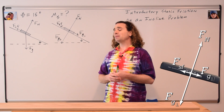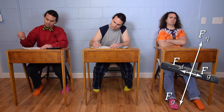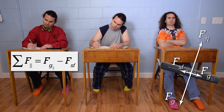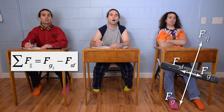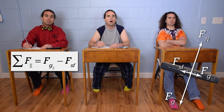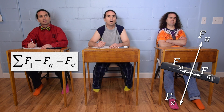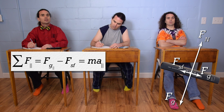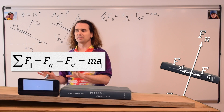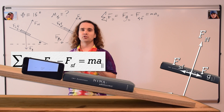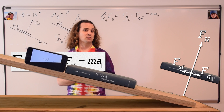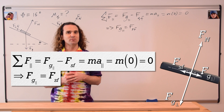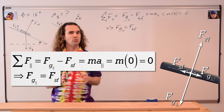Mr. P.: Bo, could you please do the next step? Bo: Next, we need to sum the forces. Let's do the parallel direction. The net force in the parallel direction equals force of gravity parallel, which is positive because it is to the right, minus force of static friction, which is negative because it's to the left, and this also equals mass times acceleration in the parallel direction. Mr. P.: What is the acceleration in the parallel direction before the book starts to move? Class: Zero. Mr. P.: Therefore, before the book starts to move, the force of gravity parallel and the force of static friction are equal in magnitude.